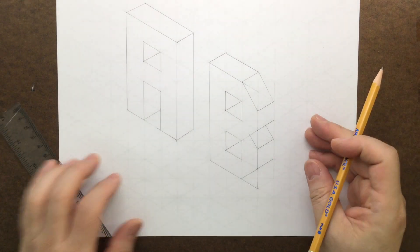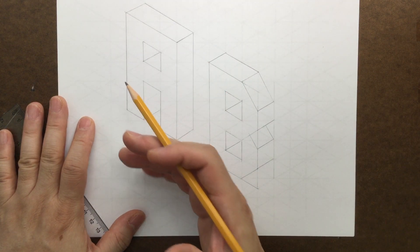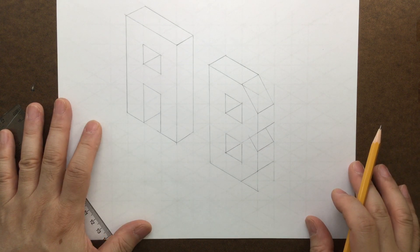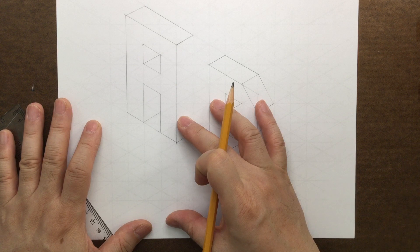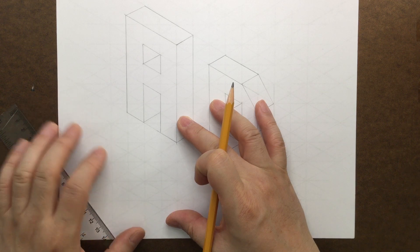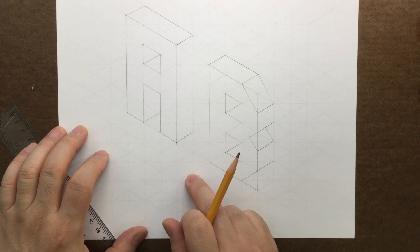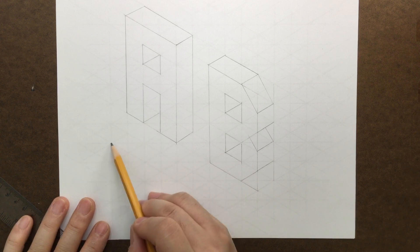So depending on where the light source is, this will be changing. Remember, when you are doing the perspective drawing, you follow the perspective vanishing point to draw the shadow. But this, all you have to do is follow the boxes. If the light is coming from there, then your shadow will join this way.